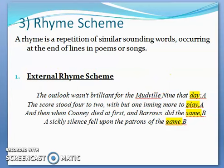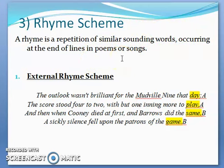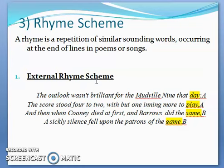Rhyme scheme is basically a repetition of similar-sounding words. We focus on words which sound similar occurring at the end of the lines in poems or songs. But this is not the only definition — you can also find words coming within the lines, which is another kind of rhyme scheme. The most common kind is the external rhyme scheme, which creates a certain symmetry within a poem, with the same-sounding words coming again and again at the end of lines.